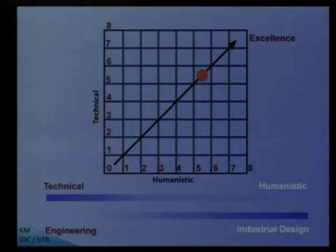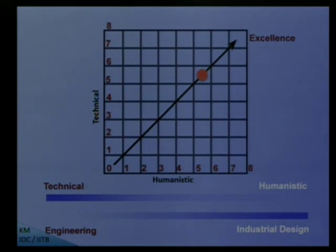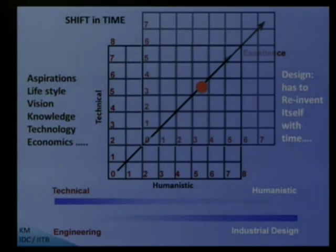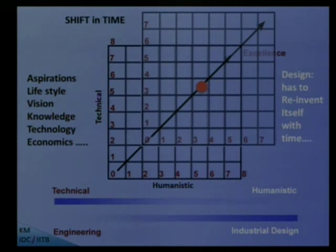We must also have a metric for these things. If we have a matrix of technical and humanistic qualities, each product will have its place — say at 5-5 — and the goal of design is to shift this point to the top right-hand corner, near excellence. Now, this metric is not static — it moves with time, it goes up with time. Why? Because there are aspirational changes, lifestyle changes, visions, knowledge, technology, and economics all change. So what is today at 5-5 becomes 3-3 tomorrow. The challenges to designers are there all the time, especially looking at the future.